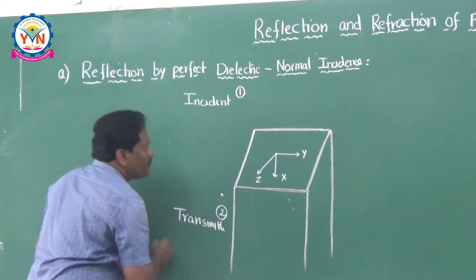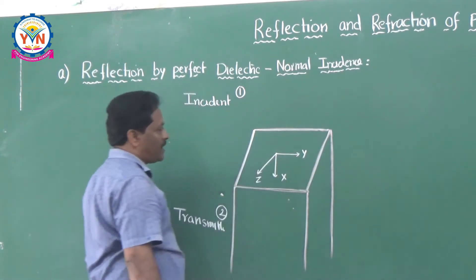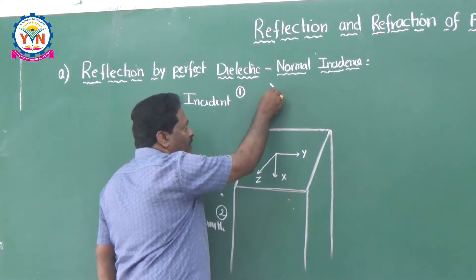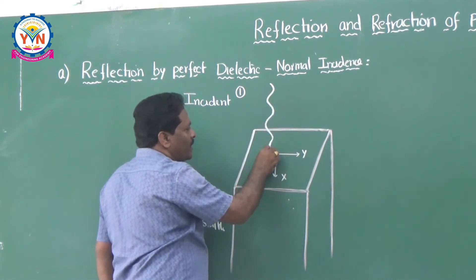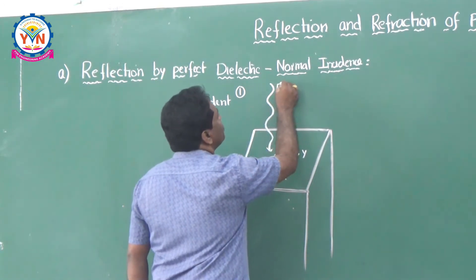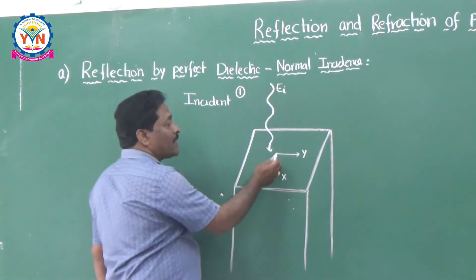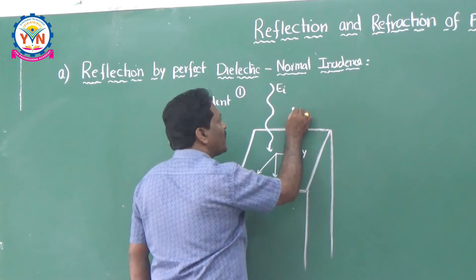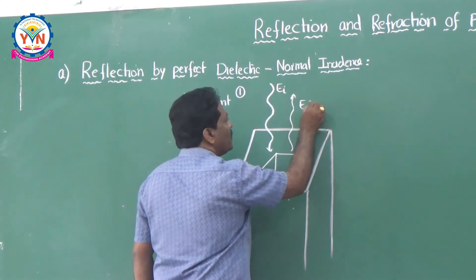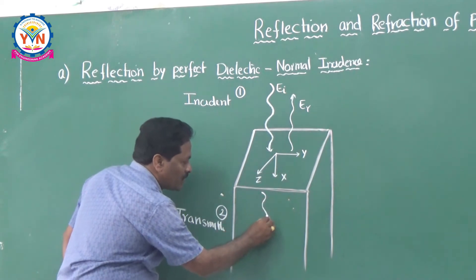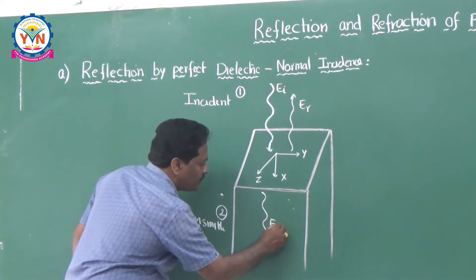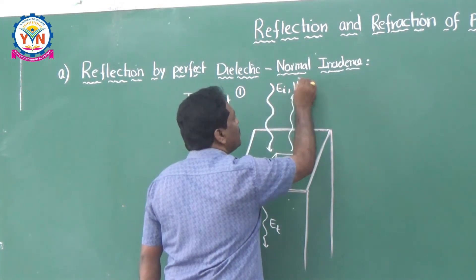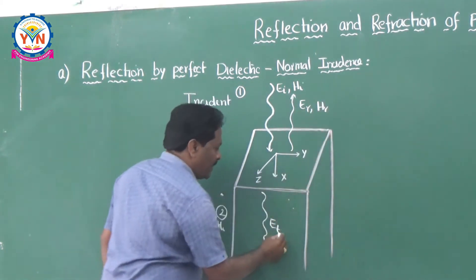The waves may also be reflected back in the same medium. When electromagnetic waves hit the surface of this perfect dielectric, the incoming wave is called the incident wave. Some part of the energy may be reflected back — that is the reflected wave ER — but most of the energy will be transmitted to the second medium, called ET. As it is a wave, there are also magnetic field components: HI, HR, and HT.